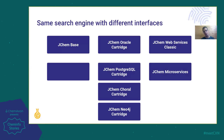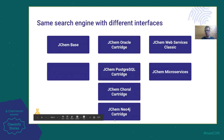Unfortunately, the experiments didn't result in a product. So if you are interested in Neo4j cartridge — chemical search in a graph database — then this tool is available as a consultancy project.